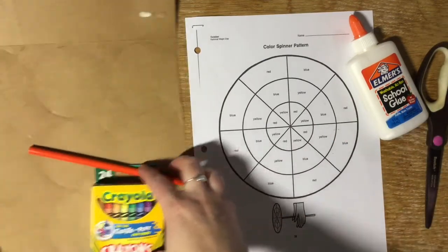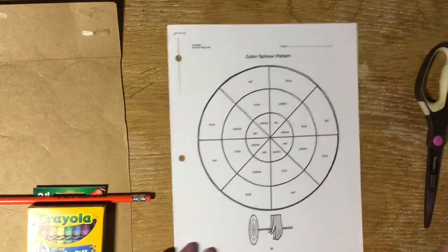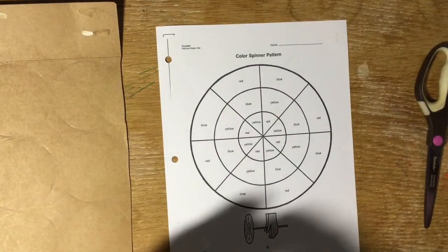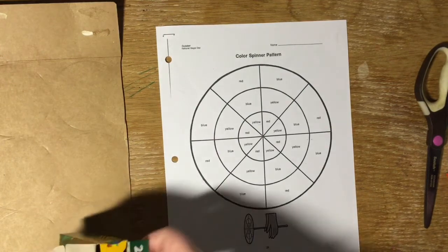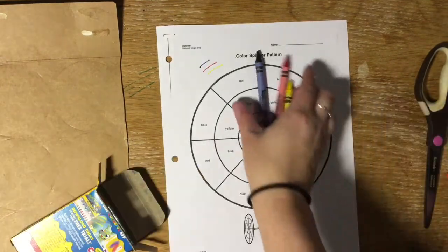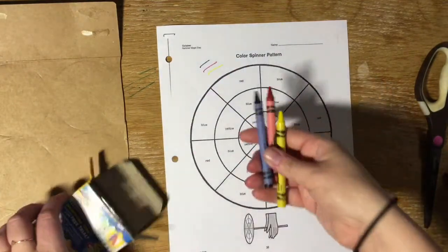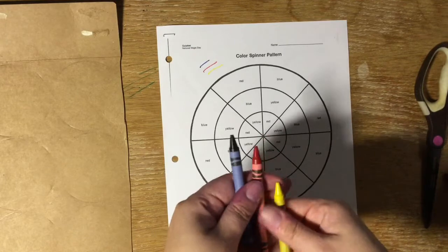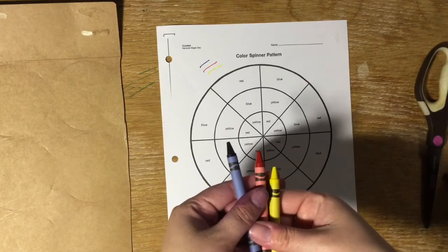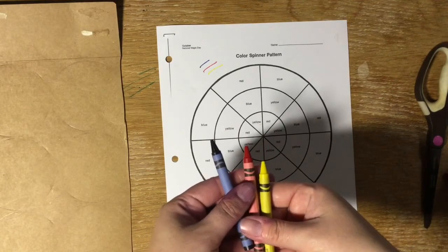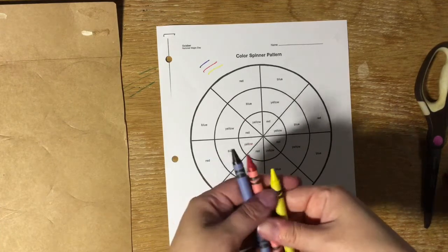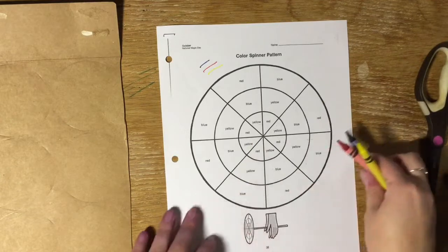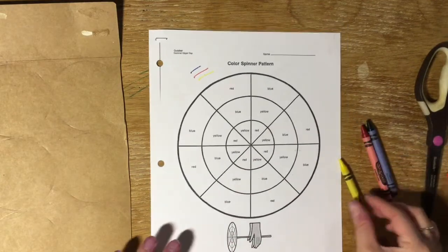So once you gather all of those things together, the first thing you're gonna do is you're going to color the color spinner and you can see that it's marked what colors you are doing where. Make sure that you find the crayon color that is actually red, yellow, and blue. You don't want to find the ones that say indigo or cerulean because those will turn out to be the wrong colors. So find your red, yellow, and blue. Then you're gonna start coloring them in.